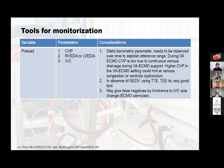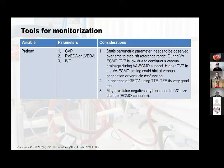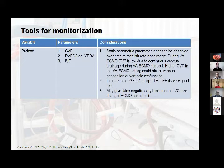Regarding the inferior vena cava: if there is high intrathoracic pressure, you cannot use IVC to assess preload. Furthermore, when a patient is cannulated for VA ECMO, the cannula passes through the inferior vena cava to the right atrium, so IVC assessment will give false negatives because the cannula is there.